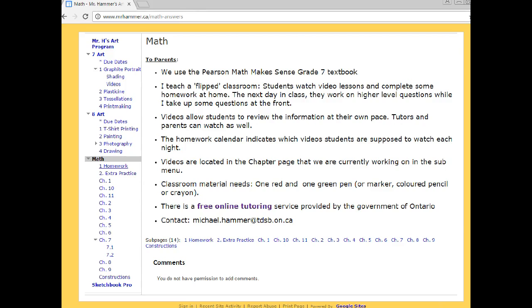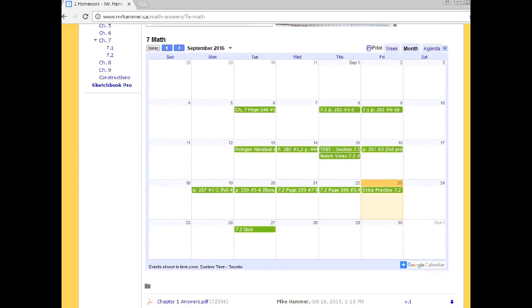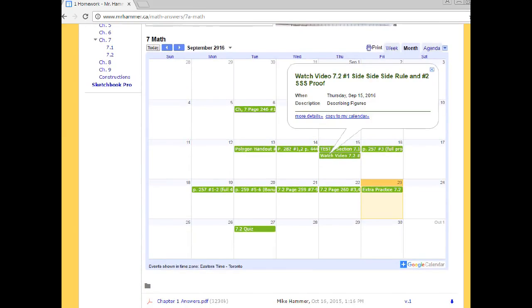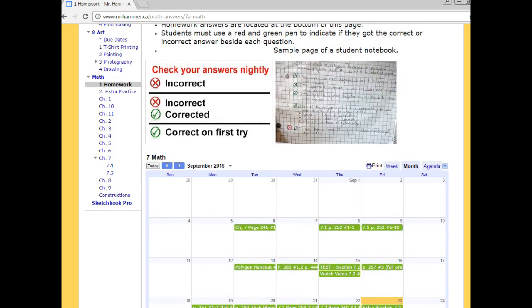Where would they find those videos? Well, then you would go to the homework page, and you would scroll down to the calendar. And in the calendar, for example, on September 15th, it says to watch two videos, 7.2 number 1 and 7.2 number 2. Well, that would be located on the left. Under math, we have all the different chapters, and there's 7.2.